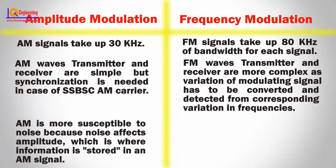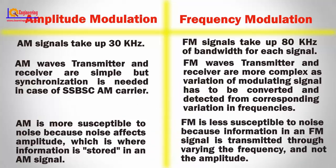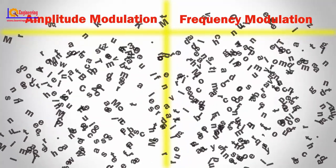AM is more susceptible to noise because noise affects amplitude, which is where information is stored in the AM signal. Whereas FM is less susceptible to noise because the information in an FM signal is transmitted through varying the frequency and not the amplitude.